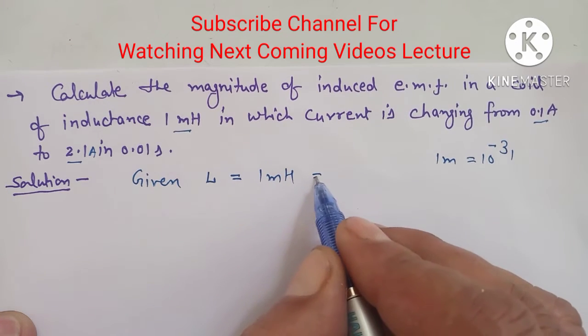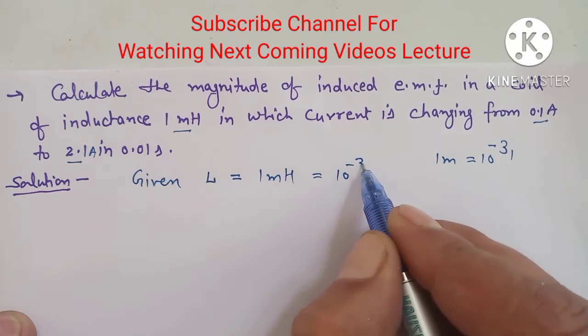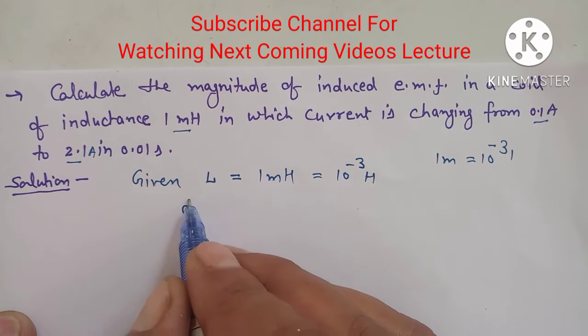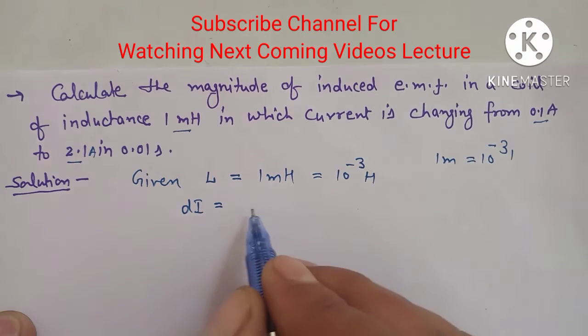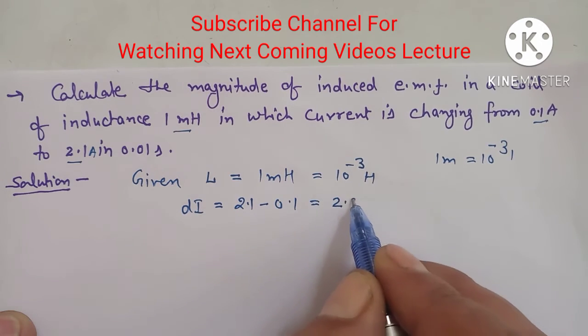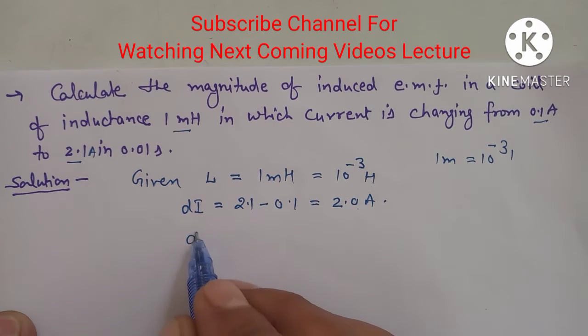So this becomes 10 raised to power minus 3 H. Now, change in current, that is dI, equals 2.1 minus 0.1 and it is equal to 2.0 ampere.